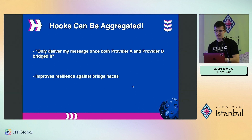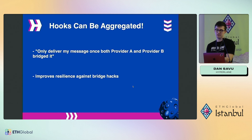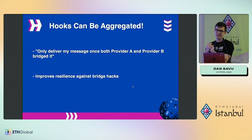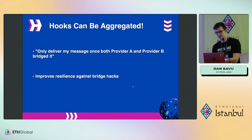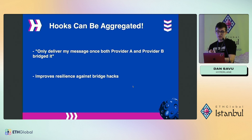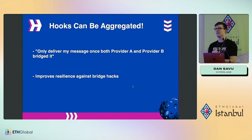What this allows you to do — and I think is really cool — is aggregate several bridge providers or security modules configured via Hyperlane. For instance, you can say 'only deliver my message once both provider A and provider B have bridged it.' This greatly improves resilience: if provider A is hacked, the message won't be delivered because you need both. Or you can combine a provider with a multi-sig your team controls — the bridge isn't centralized, but if provider A is hacked, your entire bridge isn't compromised.